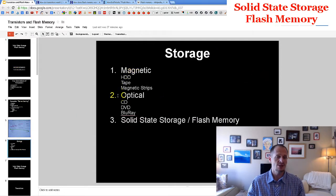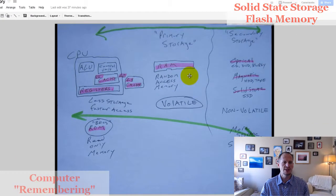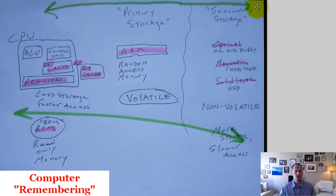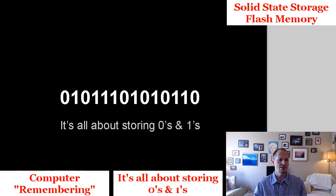We've looked at magnetic storage, we've looked at optical storage, and now we're looking at solid-state storage. In our diagram of computer memory, we're over here in the secondary storage area, learning about the different categories of secondary storage. In computers it all comes down to zeros and ones.